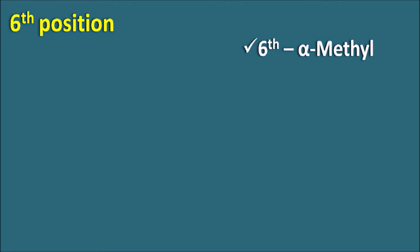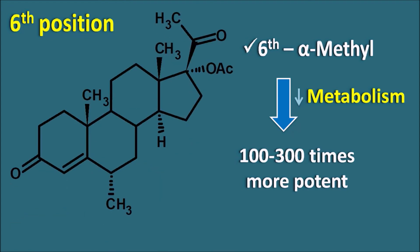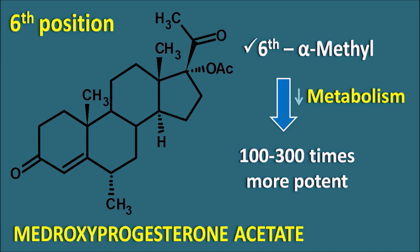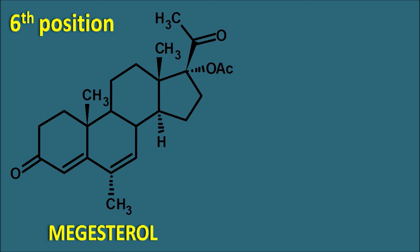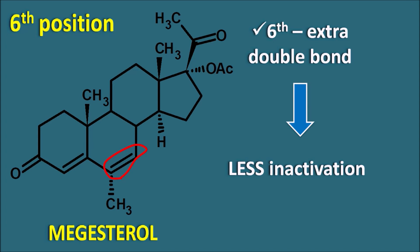At the 6th position, if an alpha-methyl group is substituted, this can prevent inactivation — 6-alpha-methyl substitution decreases metabolism, thereby increasing activity. The drug becomes 100 to 300 times more potent compared with progesterone. One well-known drug is medroxyprogesterone acetate, where an alpha-methyl group at the 6th position inhibits metabolism, thereby increasing potency. Similarly, in megestrol, an extra double bond at the 6th position further reduces inactivation and increases potency, making megestrol more potent than medroxyprogesterone.